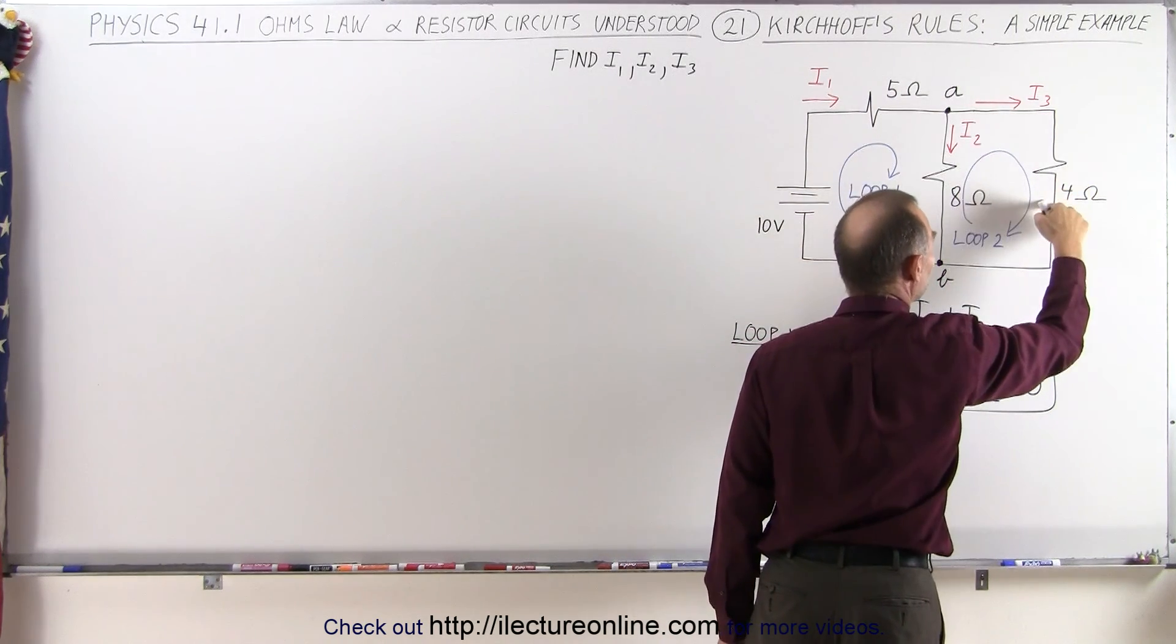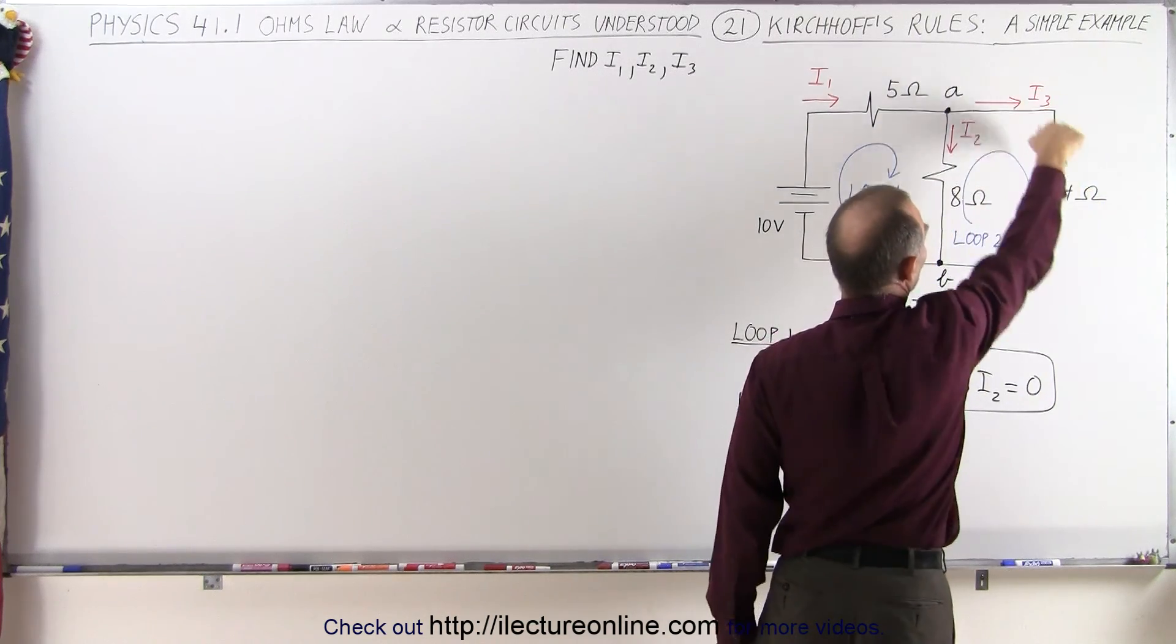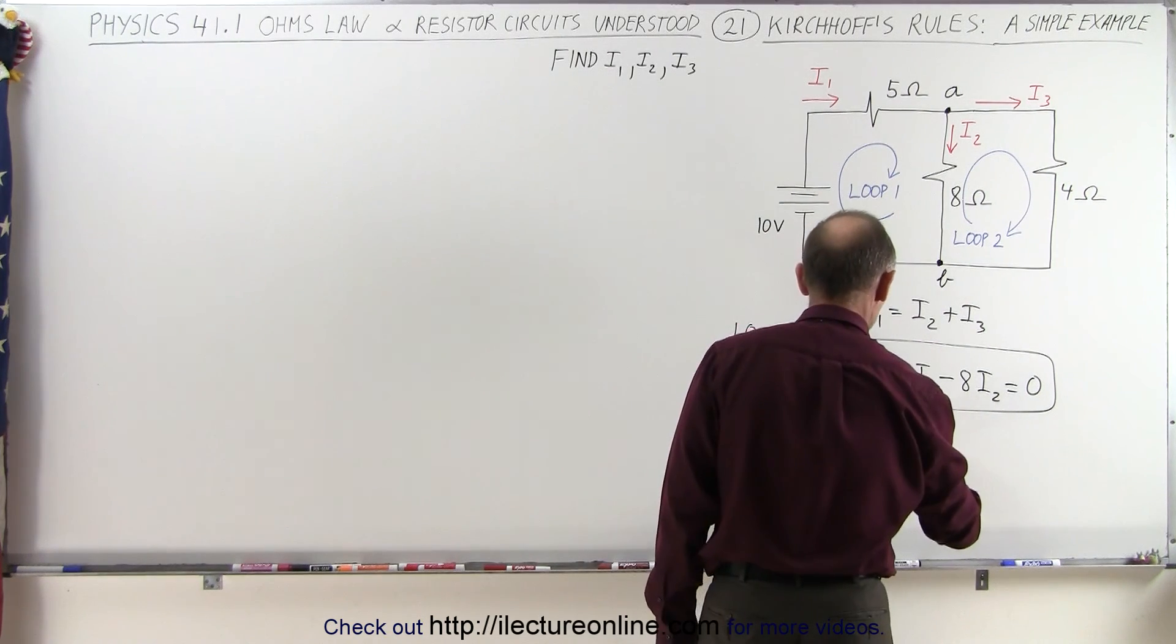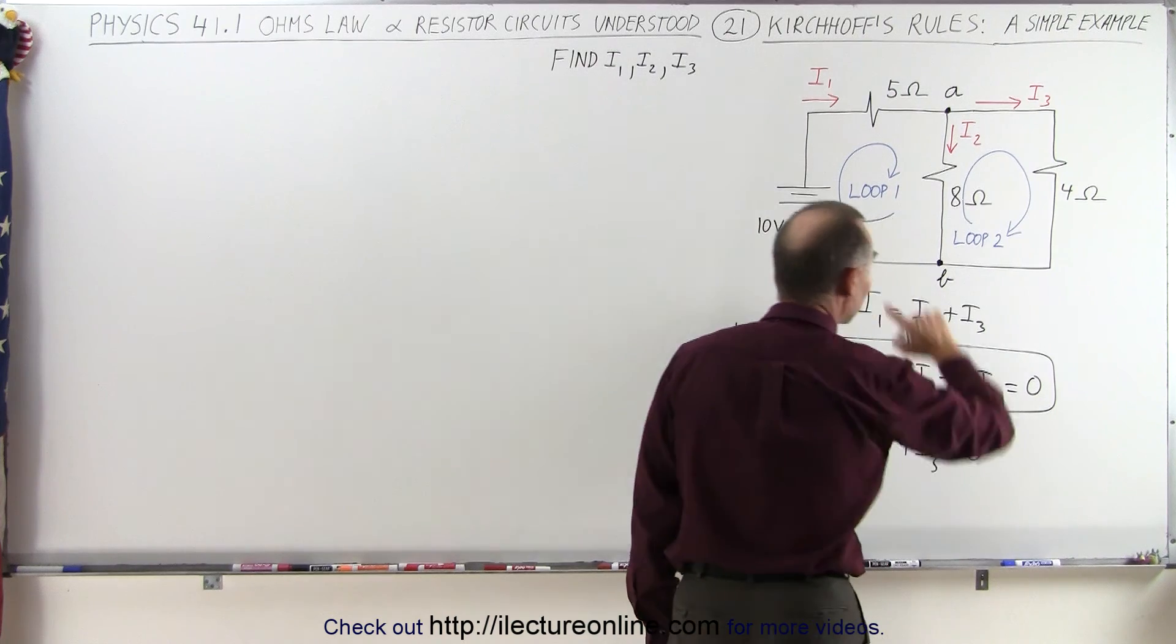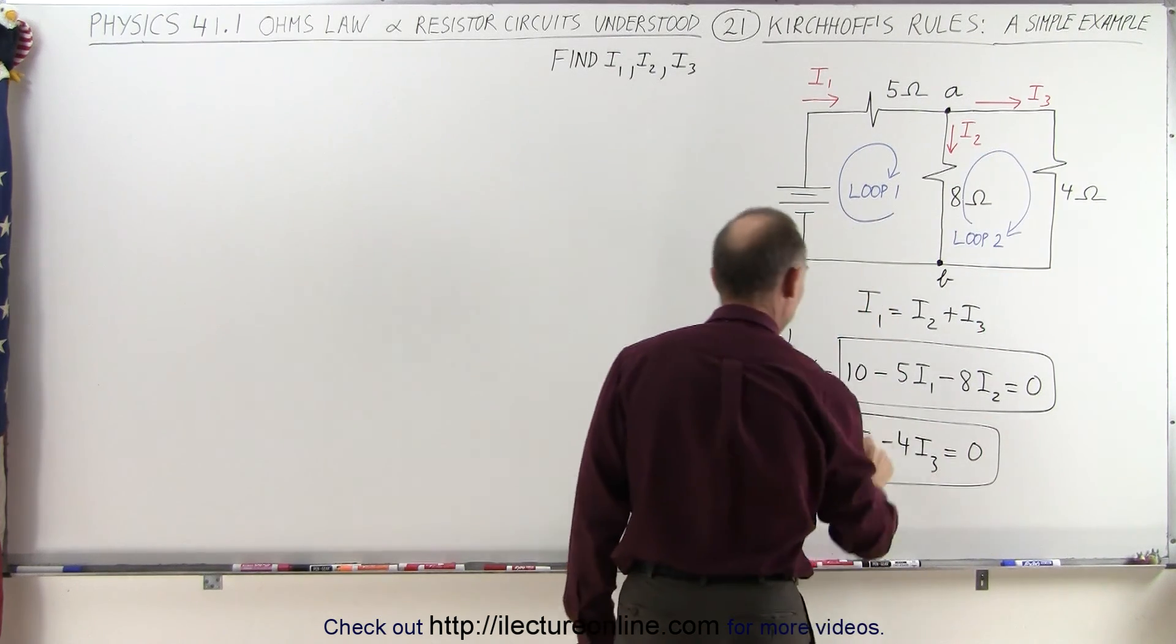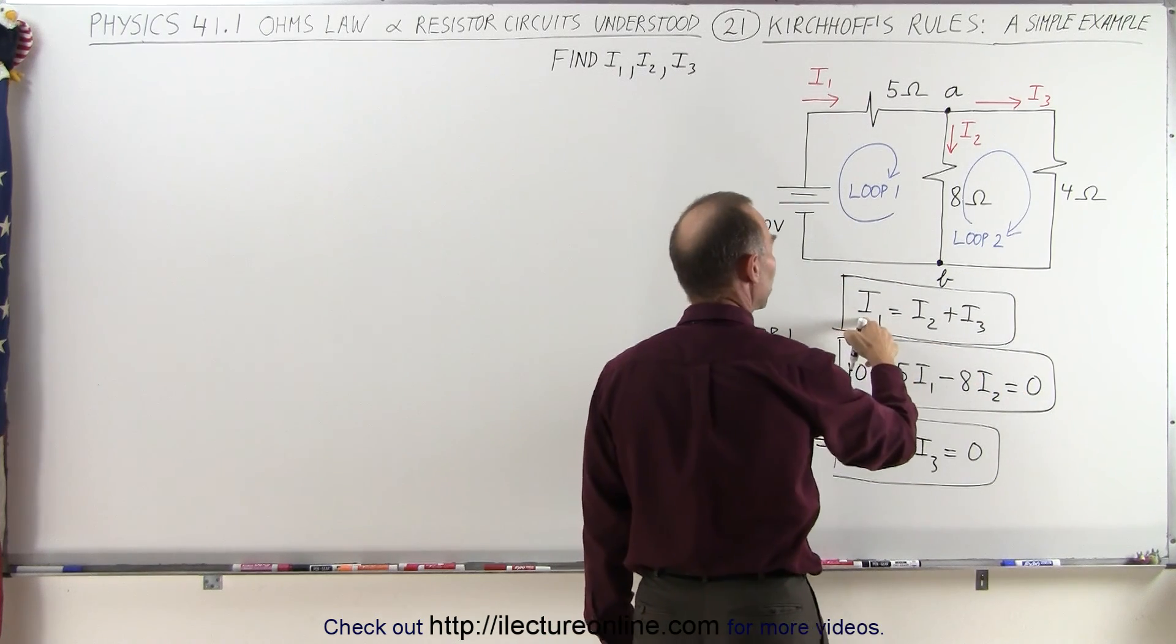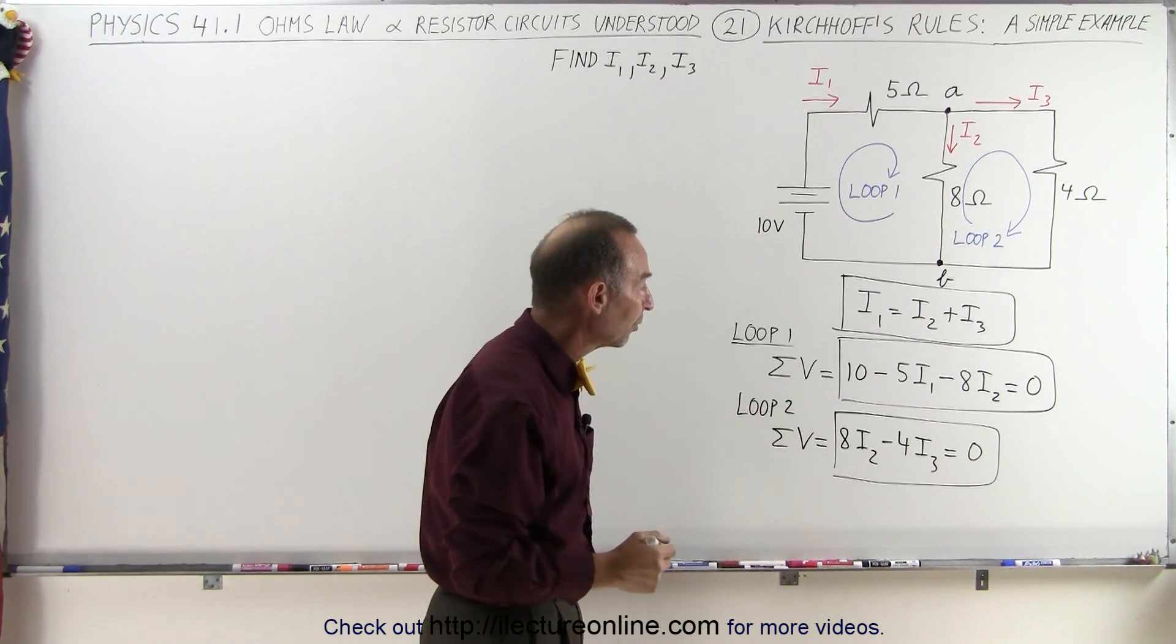When you go in the opposite direction, you have a voltage rise, so that will be plus 8 times I2. We go around the corner, up here, and now across this resistor, which is now in the opposite direction. Oh no, not opposite, same direction as I3, so that's a voltage drop, so that will be minus 4I3, and that adds up to zero, because now we come all the way around back to B. So there's our third equation.